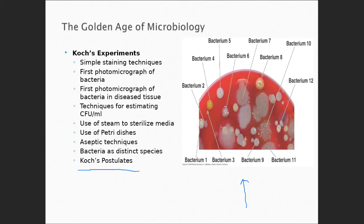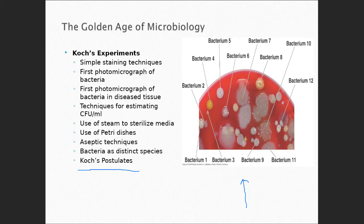Number one: for every single infectious disease, there is one infectious agent that causes that disease. Number two: from an infected individual, the infectious agent can be collected, recovered, and purified in the laboratory. Number three: the purified organism can then be placed into a suitable host. Number four: the infectious agent placed into a suitable host will cause the signs and symptoms of the infectious disease. That's a mouthful, but it is so relevant even today.